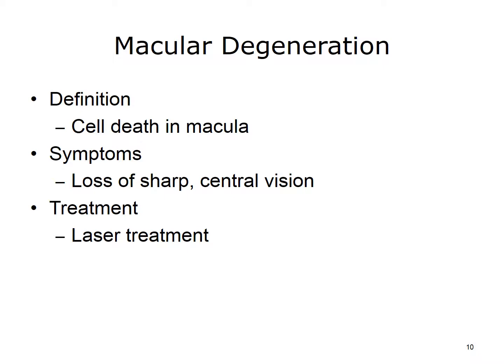Macular degeneration, or age-related macular degeneration, abbreviated AMD, is a leading cause of vision loss in Americans aged 60 and older. This disease causes the destruction of your sharp central vision. Without central vision, you cannot see objects clearly and cannot read or drive. Macular degeneration is a progressive disease that does not hurt, but it causes cells in the macula to die. In some cases, the disease advances so slowly that people do not notice a change in their vision.